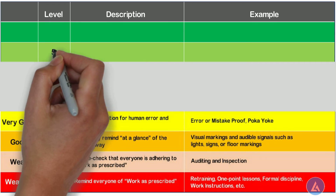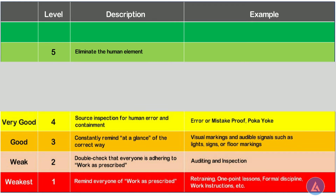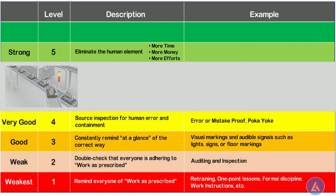Level 5: Eliminate the human element. This is considered a strong level of countermeasure compared to levels 1 to 4. Countermeasures at this level require more resources like time, money, and effort. The focus is on eliminating the human element from the process or process steps to avoid the reoccurrence of the problem.